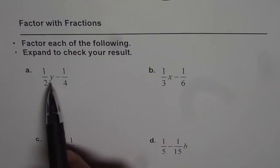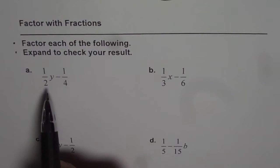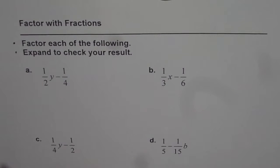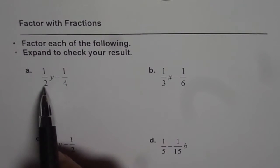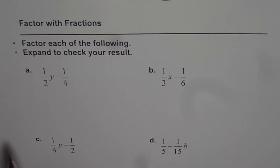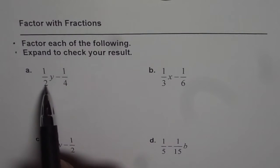We have 1/2y - 1/4. This can be factored in two different ways. We can factor 1/2, which is the coefficient of y, or we can factor 1/4. It is good practice to always factor out the lowest of the two.